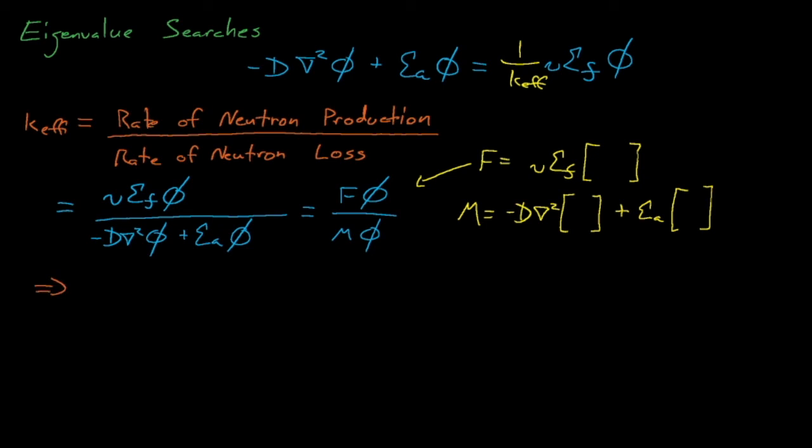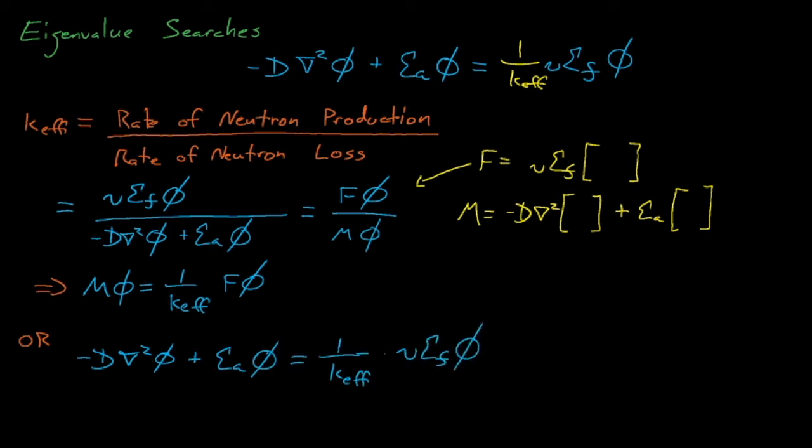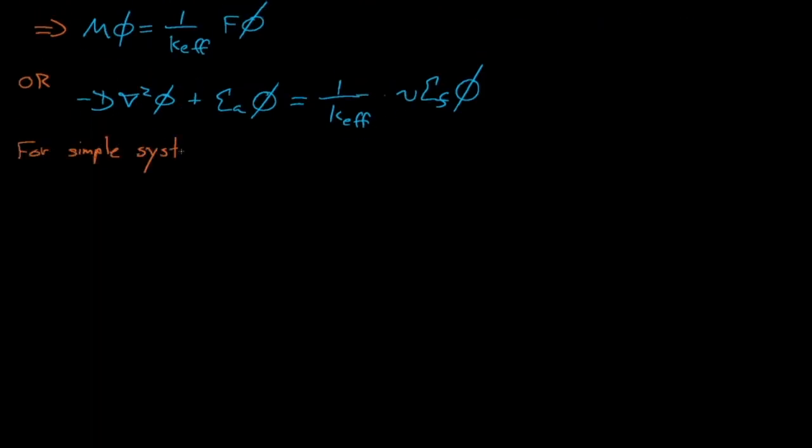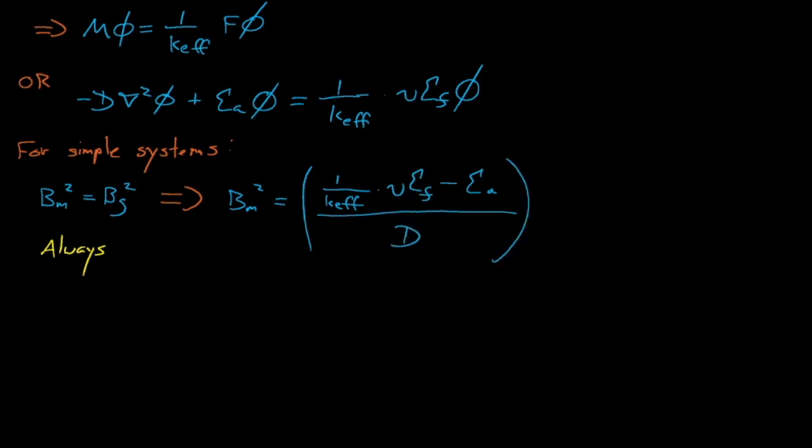So based on this definition of the eigenvalue, we can insert a 1 over K-effective term next to the fission neutron production term, and we see that we arrive at a very lightly modified version of the diffusion equation. Based on the original definition for the material buckling, we can define an analogous version of the material buckling for this equation, which happens to incorporate K-effective. After we do this, we once again have a criticality condition, which is that the material buckling must equal the geometric buckling. Because of the K-effective term, this equality must hold true regardless of how supercritical or how subcritical the system is.